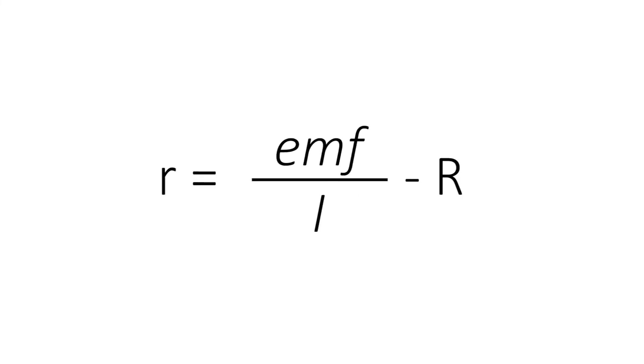We must rearrange this formula to find small r. Small r will equal EMF divided by I minus big R. In this case it is equal to 5 divided by 0.3 minus 12.